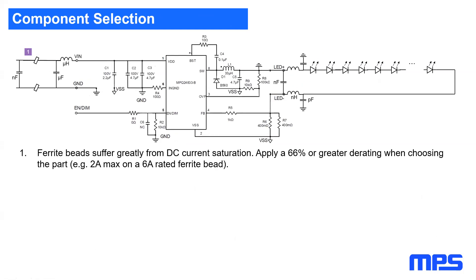Regarding ferrite beads, they have a very big drawback: they suffer greatly from DC current saturation. Even if the manufacturer advertises a ferrite bead rated up to 6 A, this is only the thermal rating. Even for a 6 A ferrite bead, if you run 2 A DC through it, it will saturate and lose 90% of its impedance. As a rule of thumb, apply a 66% derating: a 6 A ferrite bead should only be used for maximum 2 A DC. If you want to use it for more, it won't be useful and you would be better off using small inductors or a typical common mode choke.